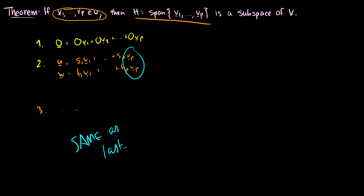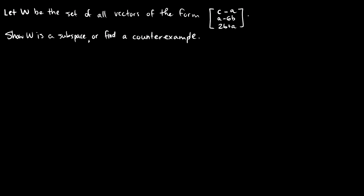Here's a question that may look more confusing in a textbook. Let W be the set of all vectors of the form (C − A, A − 6B, 2B + A). We want to show that W is a subspace or find a counterexample. Since we just worked with spans, maybe we should reduce this to a span of some vectors and show that this is a subspace.